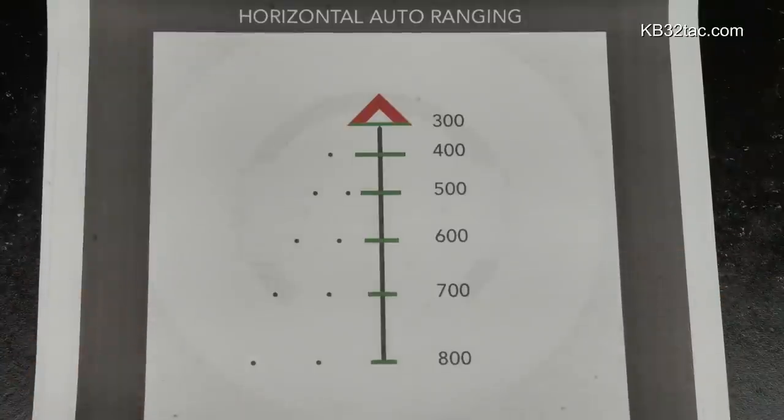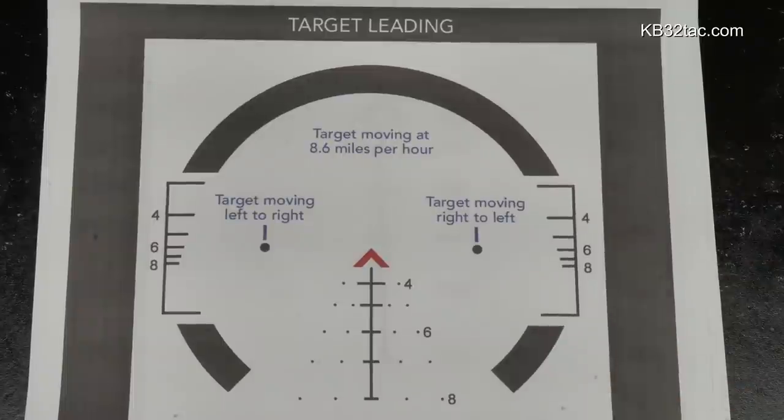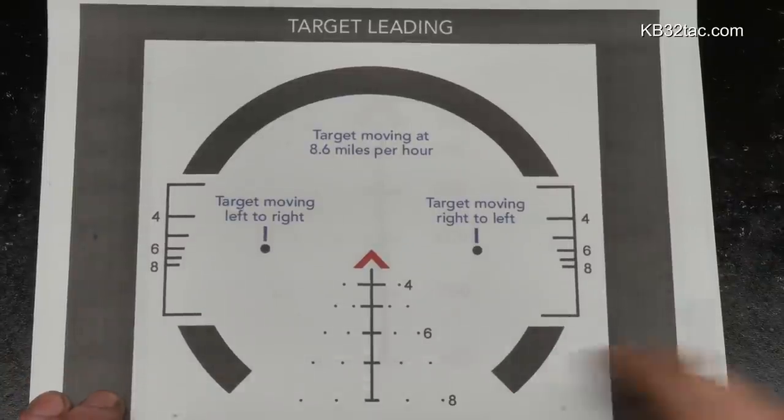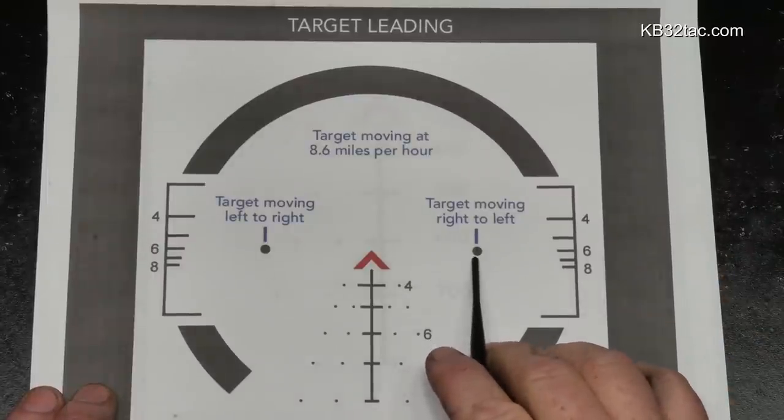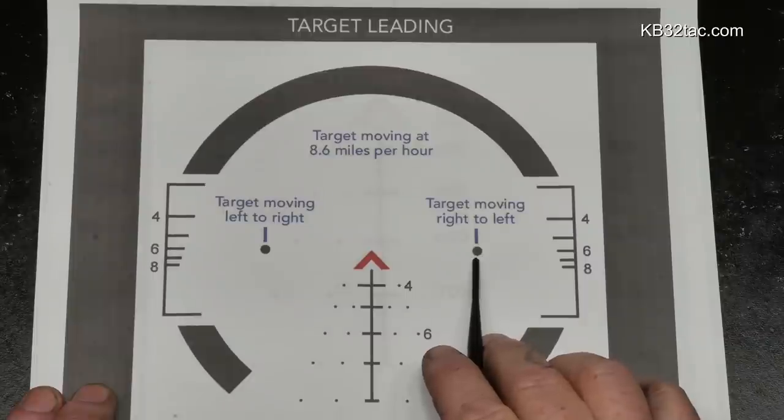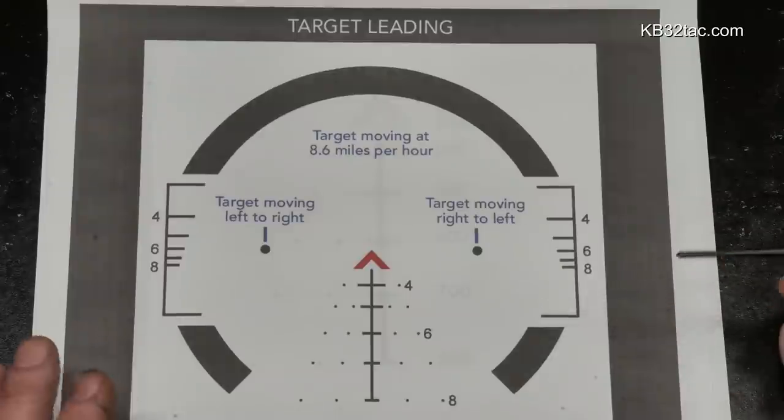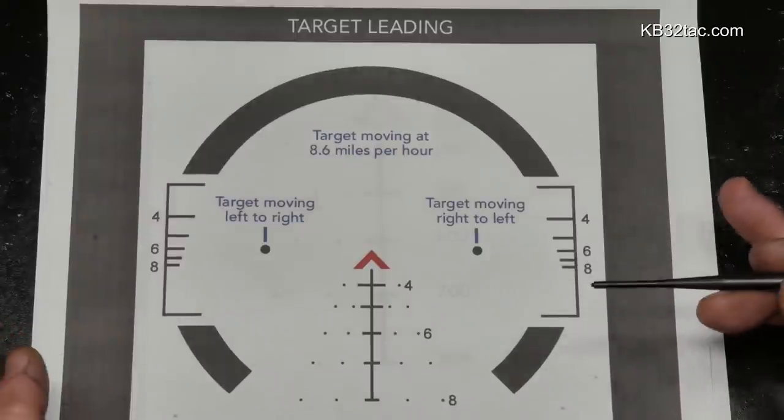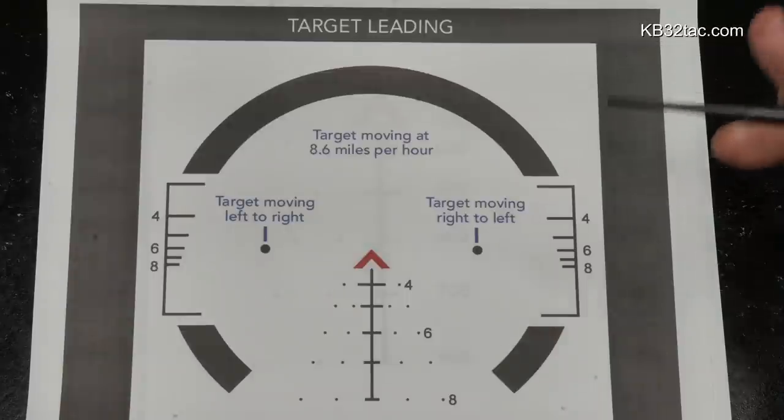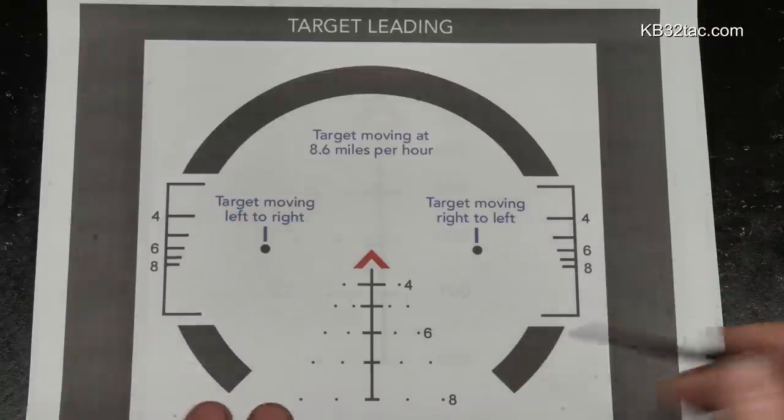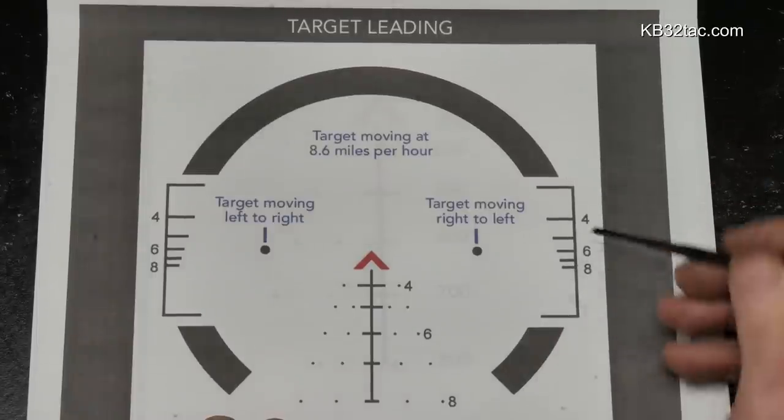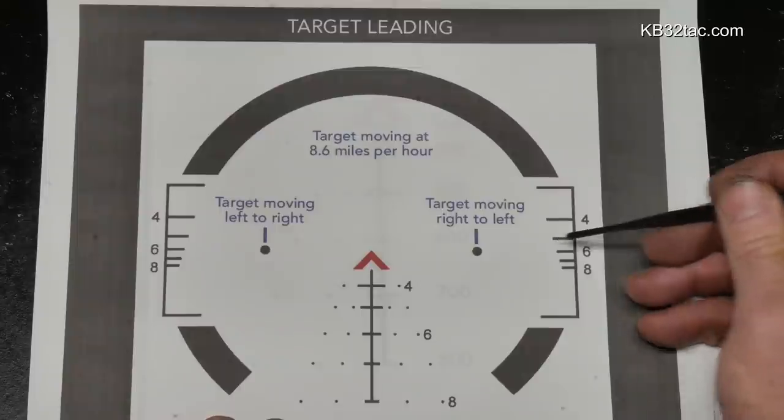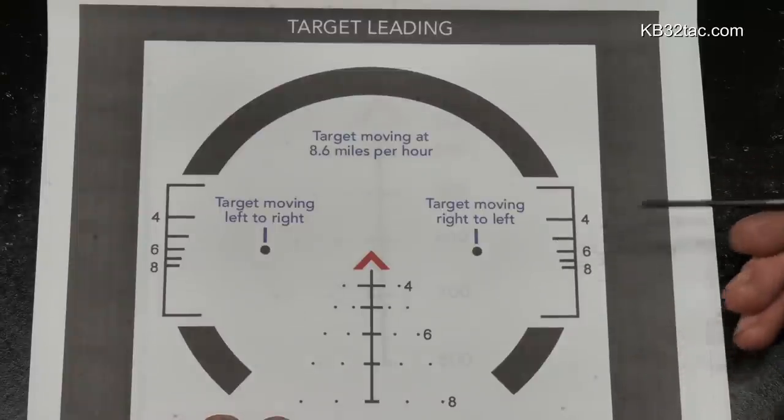Now here's another portion that I want to show you that's absolutely cool. It's in the event that your silhouette is running left to right or right to left. And at an 8.6 miles per hour, here are your target lead holds, here and here. I think that old Dimitri has thought of everything. And again, this is why companies are trying to imitate this or work around a patent pending copyright any way they can.